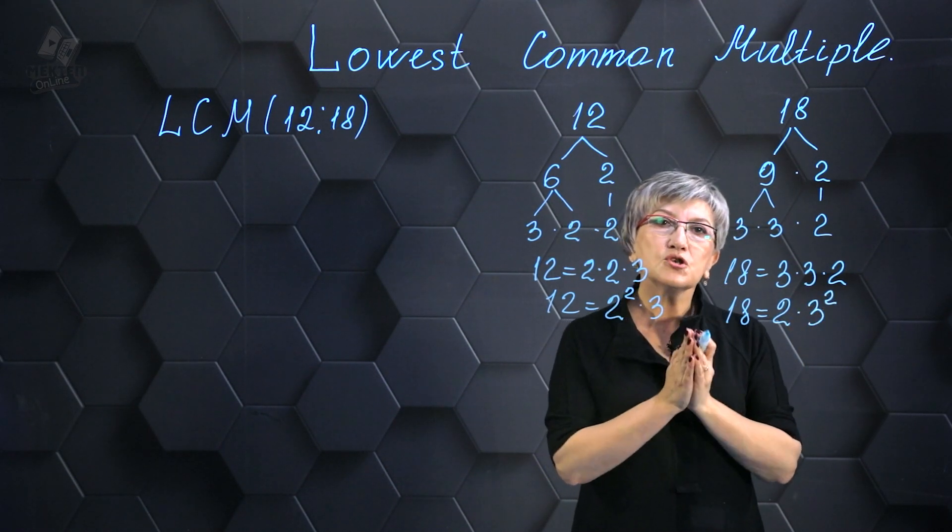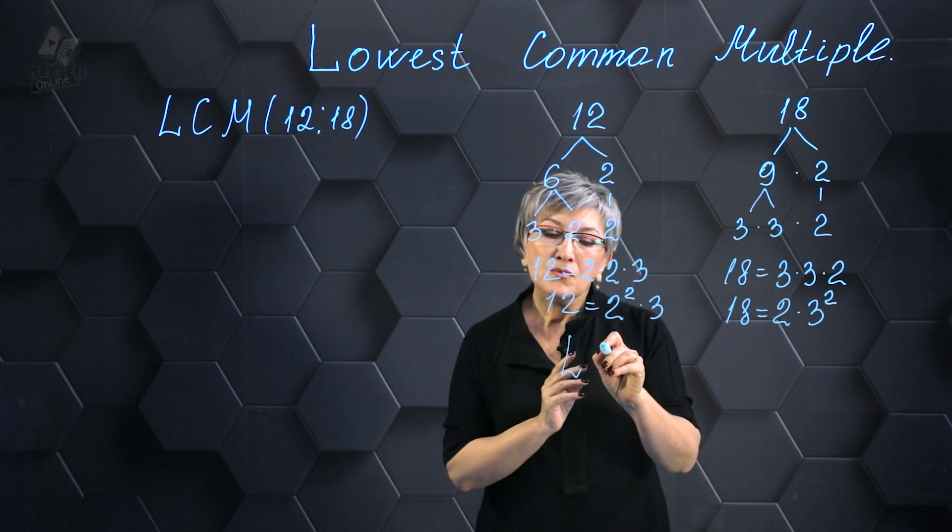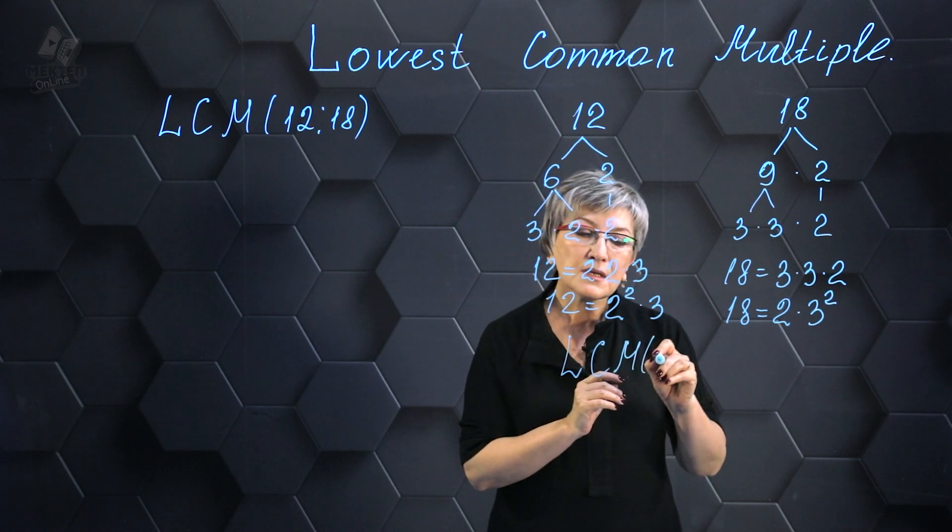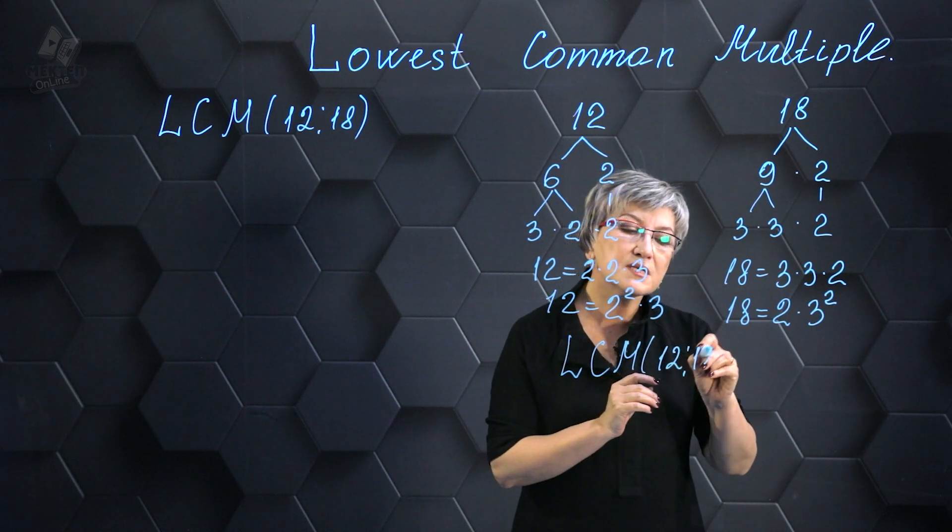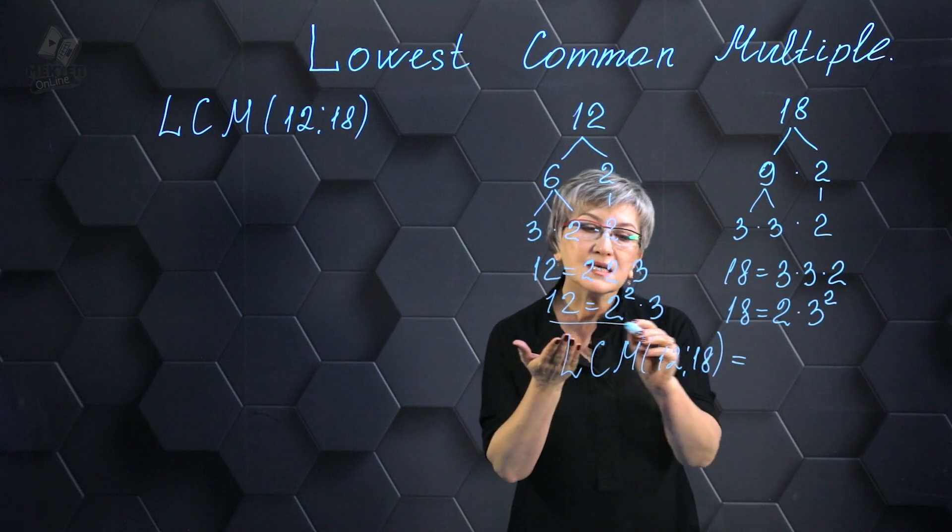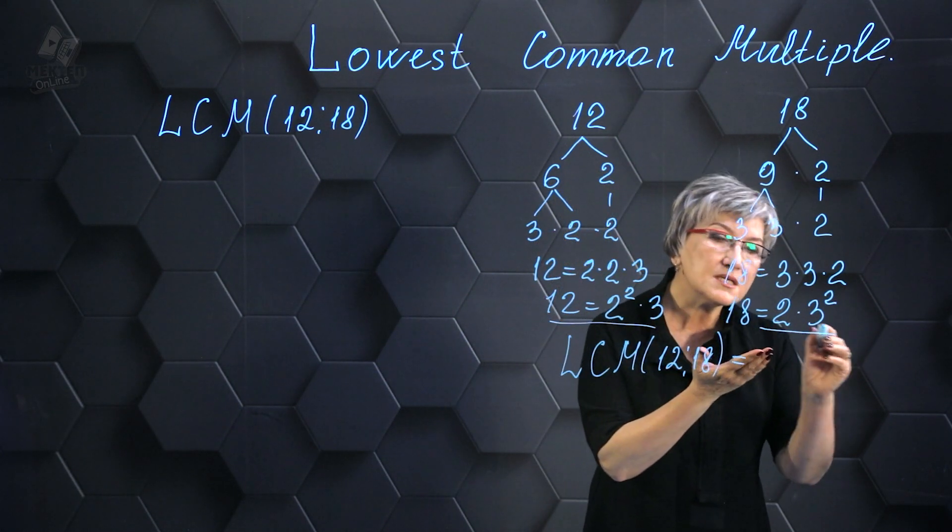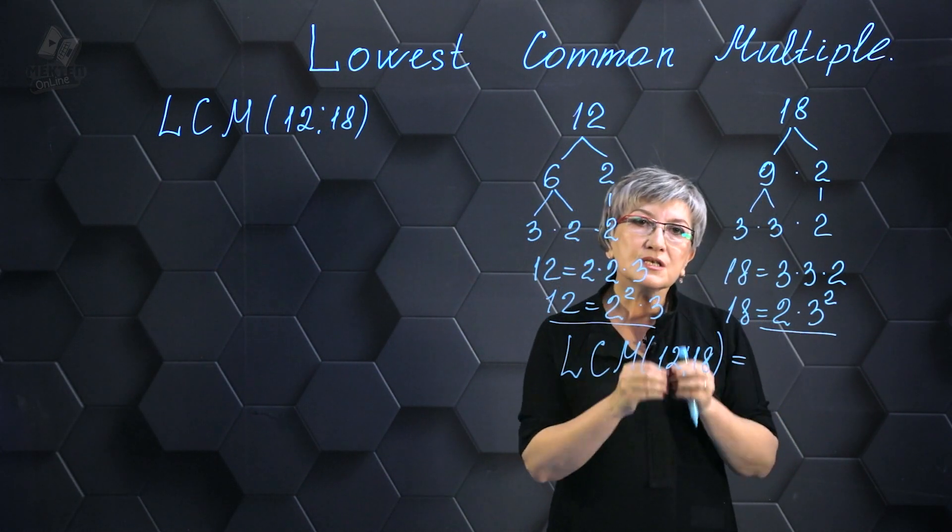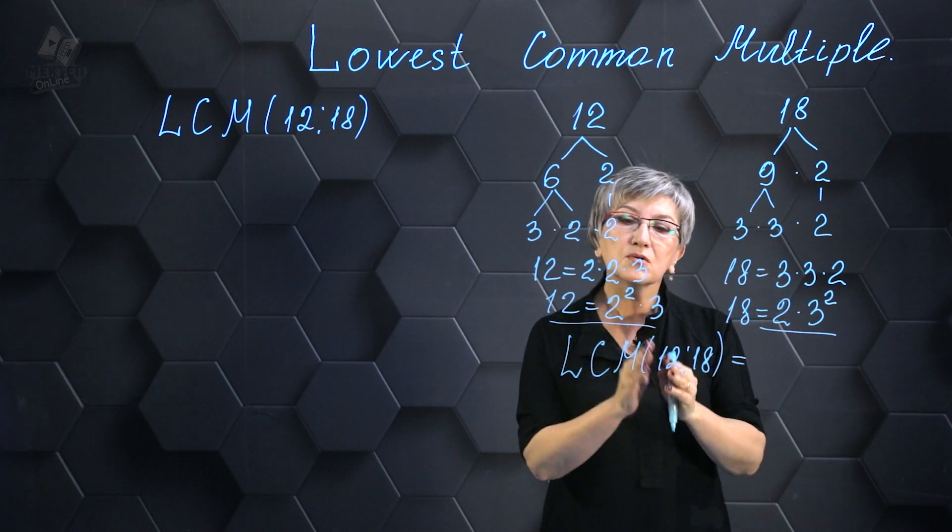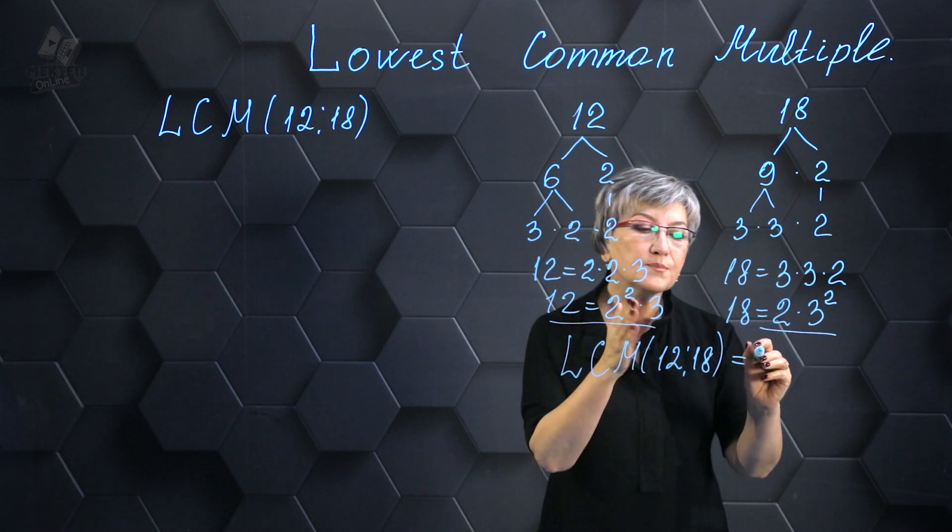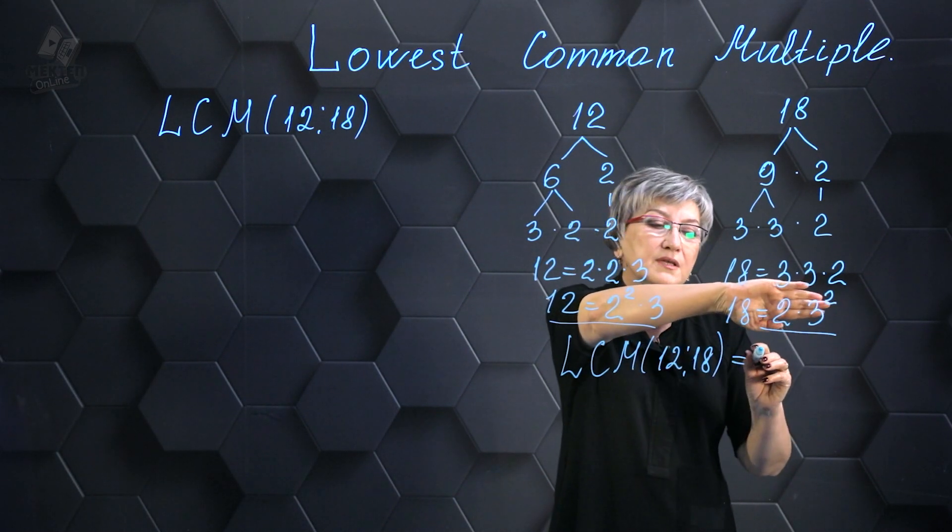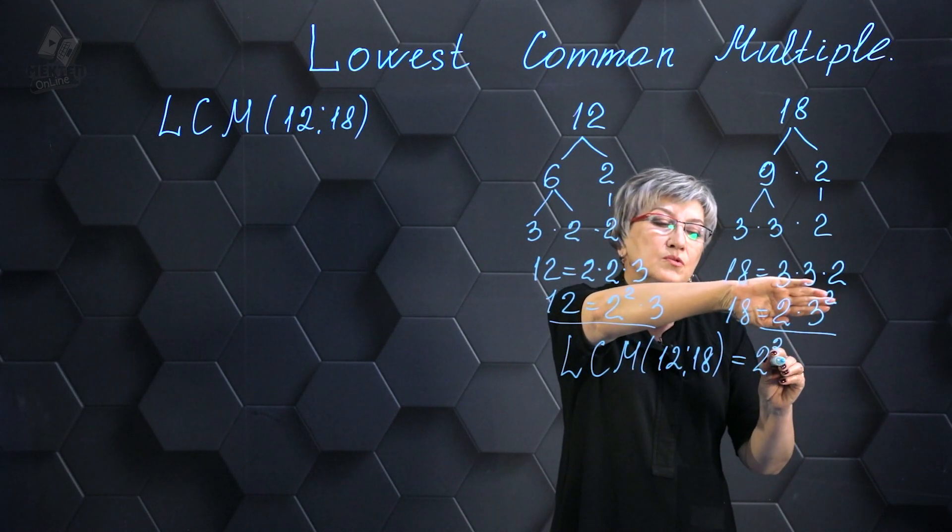Now, to find the least common multiple of our numbers 12 and 18, what do I do? From this record, I choose the numbers with the highest power. So look here, 2 squared. I write down this number. To find the least common multiple, we need to identify the prime factors of each number and then multiply the highest power of each factor. The prime factors of 12 are 2 squared and 3, while the prime factors of 18 are 2 and 3 squared. Therefore, the least common multiple is 2 squared multiplied by 3 squared.